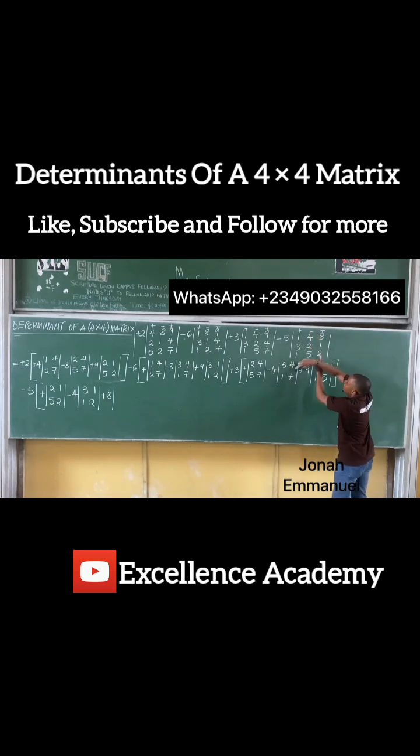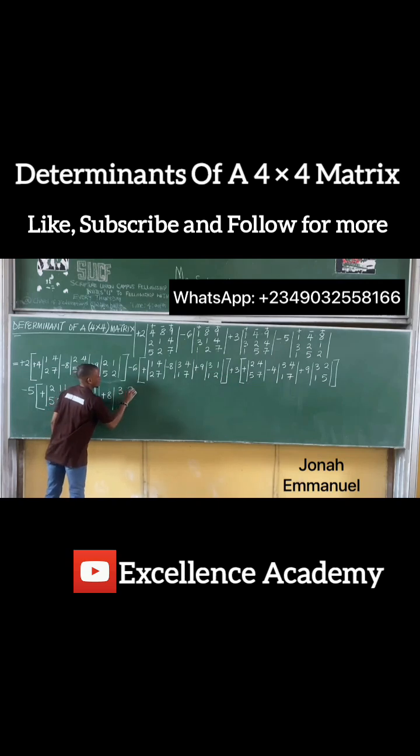So I have 3, 2, 1, 5. It becomes 3, 2, 1, 5.